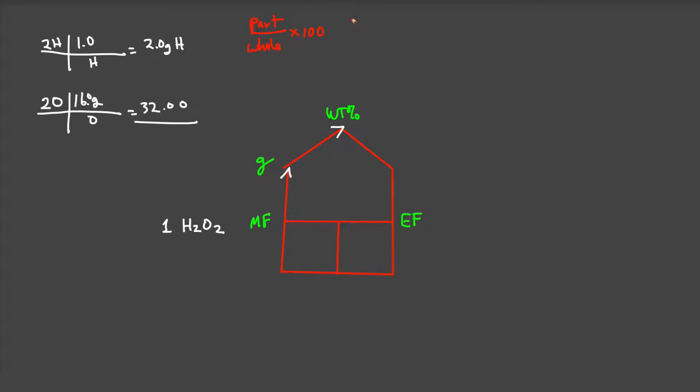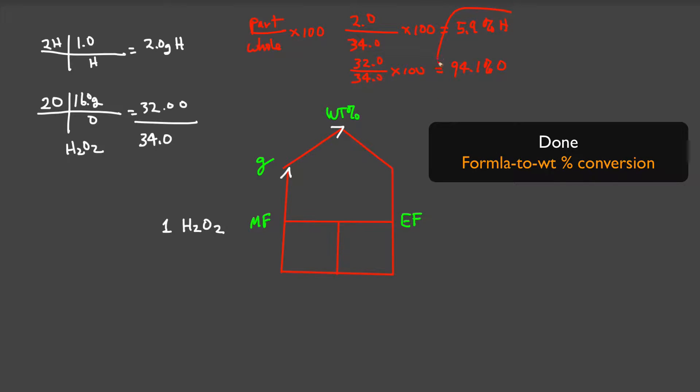The weight percent hydrogen is 2.0 grams (the part) divided by 34 grams total (the whole) times 100, which gives 5.9 weight percent hydrogen. And oxygen is 32 divided by 34 times 100, which equals 94.1 percent oxygen. That's the first step - we now have expressed hydrogen peroxide as a weight percent.